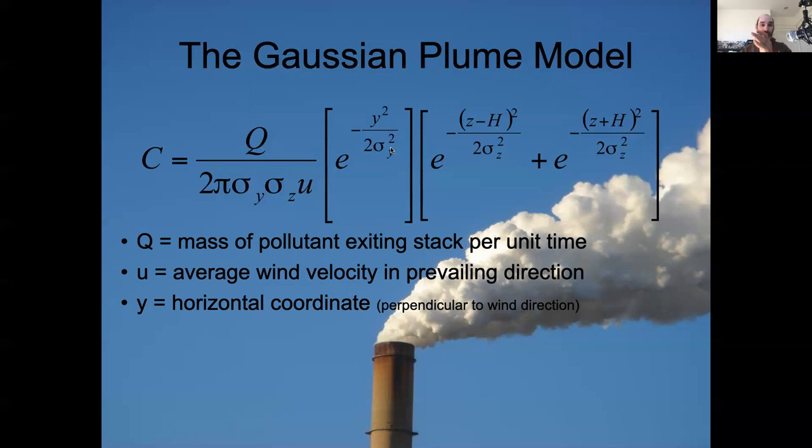So the zero on that is directly downwind, and plus or minus is kind of the left or the right of that main downwind direction from the point source.